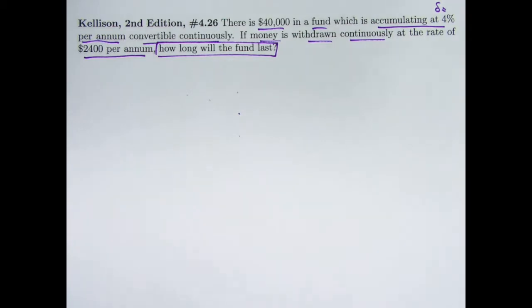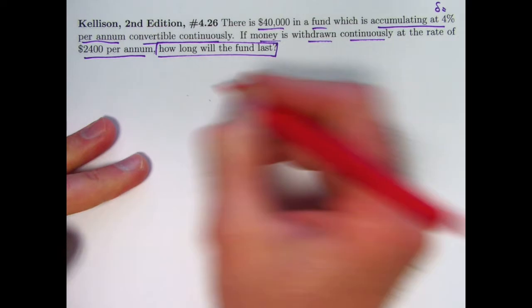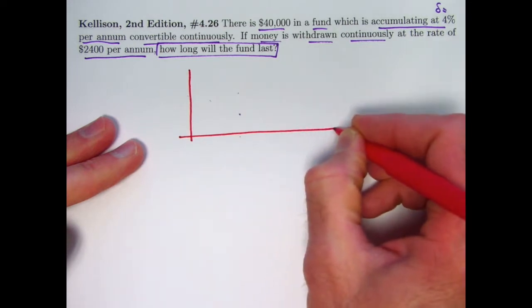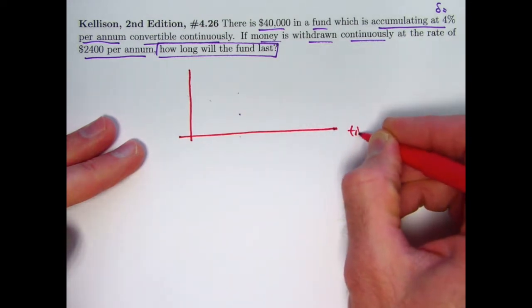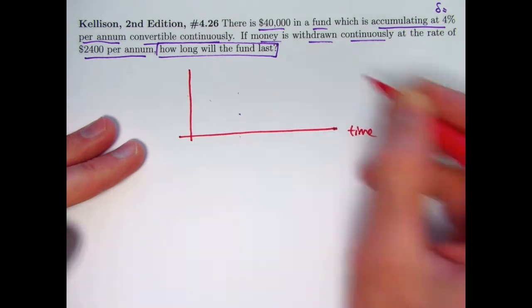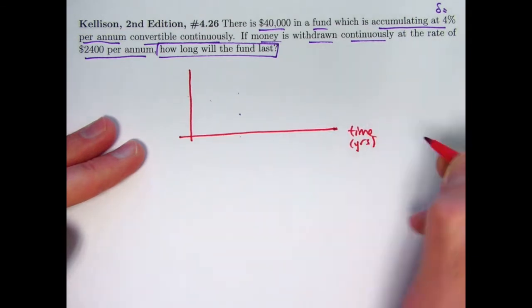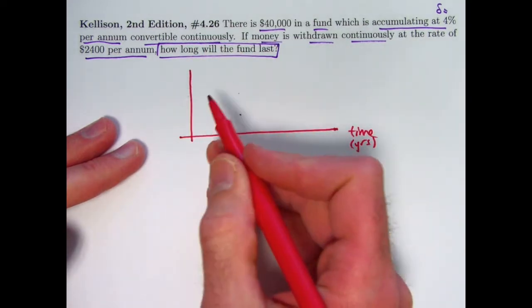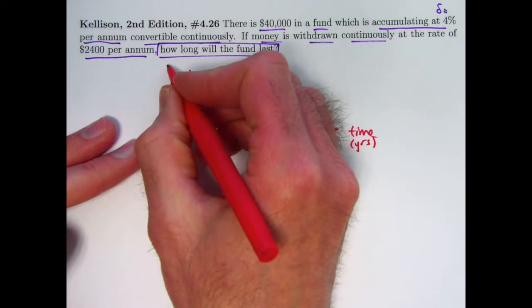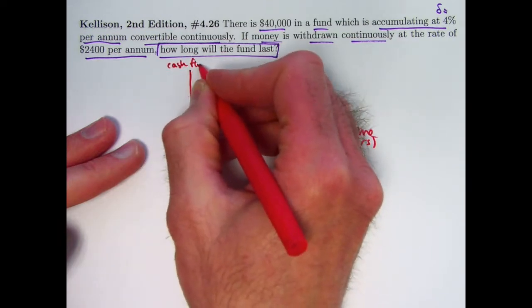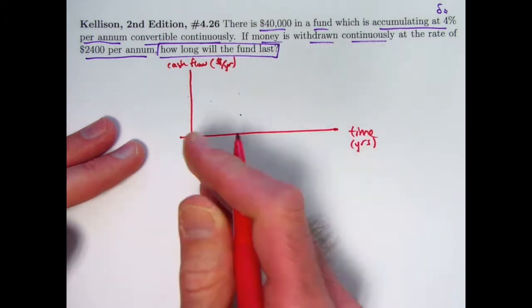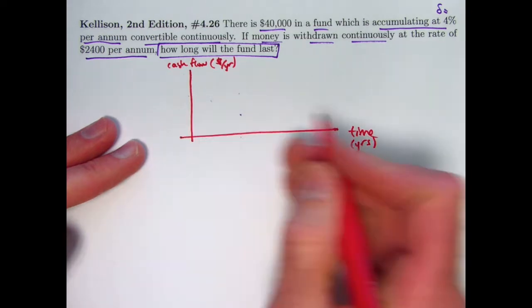All right, this is really a new concept. This is a concept of a continuous income stream, income stream or payment stream. In this case, a withdrawal stream. Let's get our minds around what's really going on here. We've got time on this axis, say in years, and we've got not money on the vertical axis, but instead a rate of money, a cash flow, you could call it, in dollars per year. And it's a continuous cash flow. It's not occurring at discrete moments in time. It's occurring continuously.